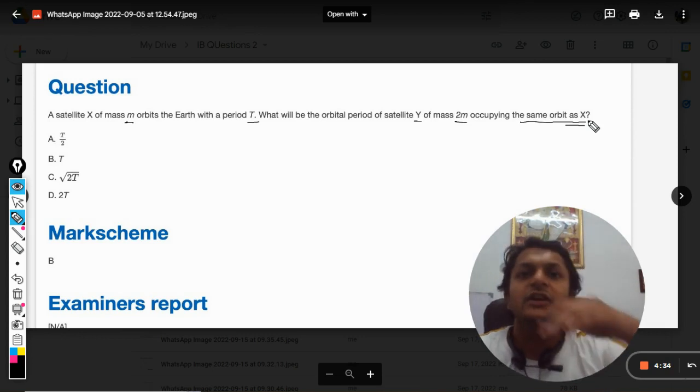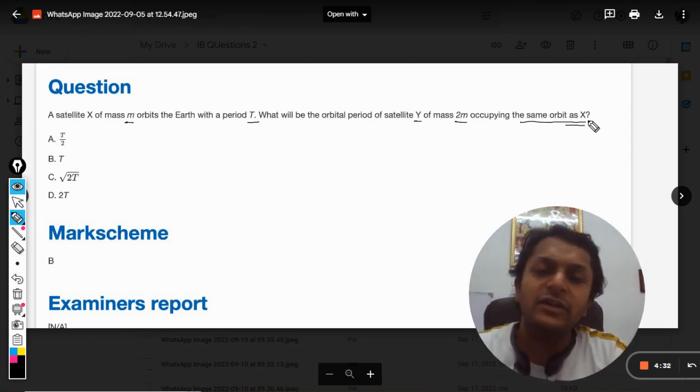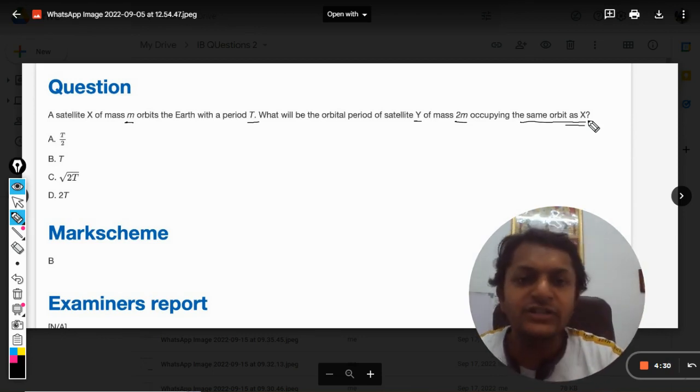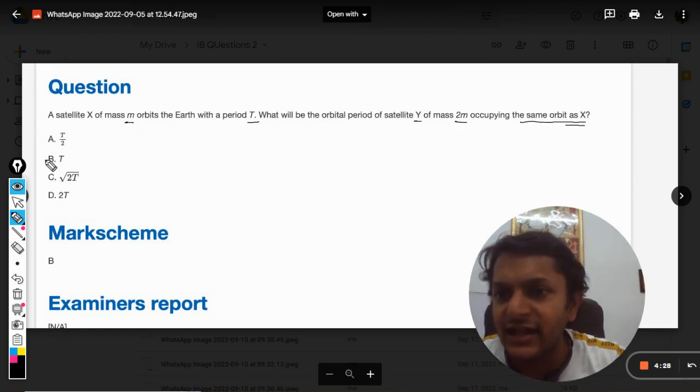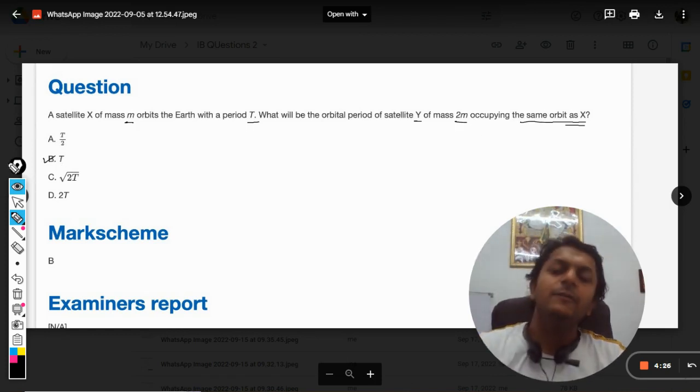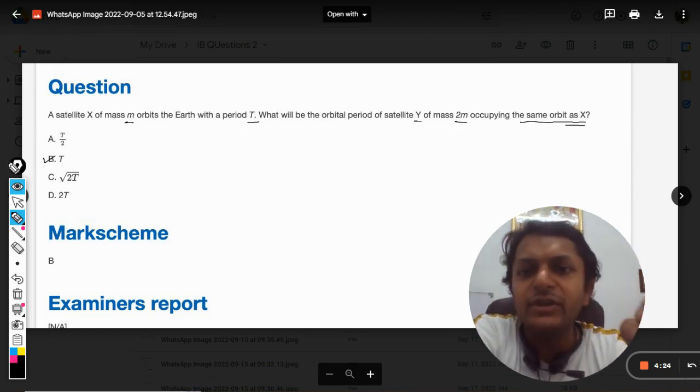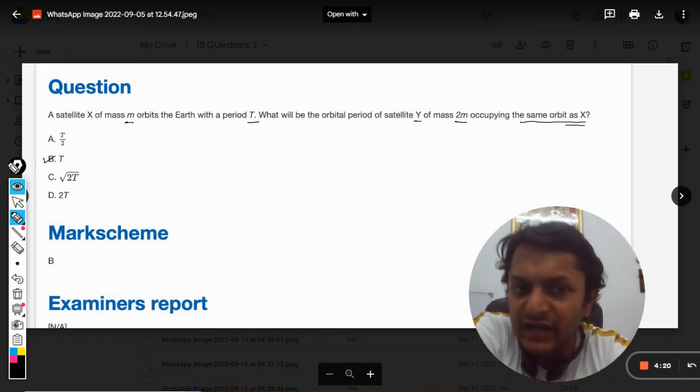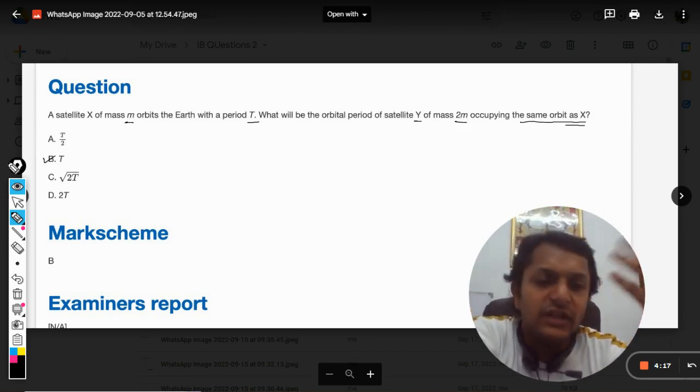So as we all know, the time period of the revolution is independent of the mass of a satellite. So in just one go I can say that the answer will be capital T, because the time period does not depend upon mass and so it will be the same in the case of both satellites. But is there any way to prove it? Let us see.